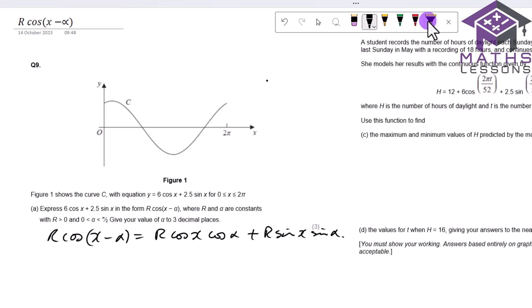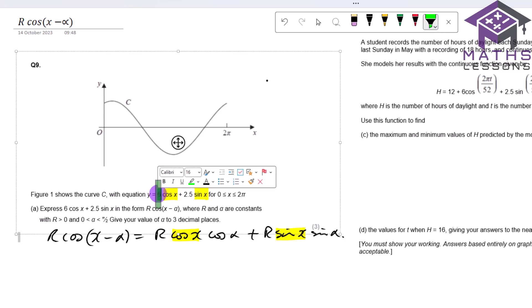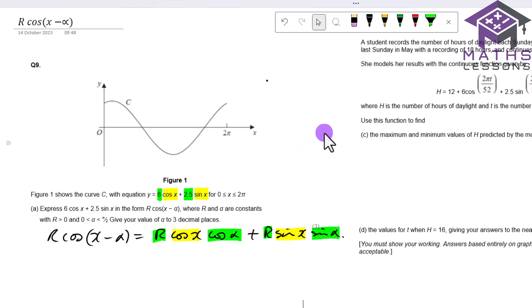And what we realize is that if you match this up here, there's your cos x and your cos x and there's your sin x and there's your sin x. So we're left with 6 equals r cos alpha and we're left with the 2.5 equals r sin alpha. And so we can form equations.